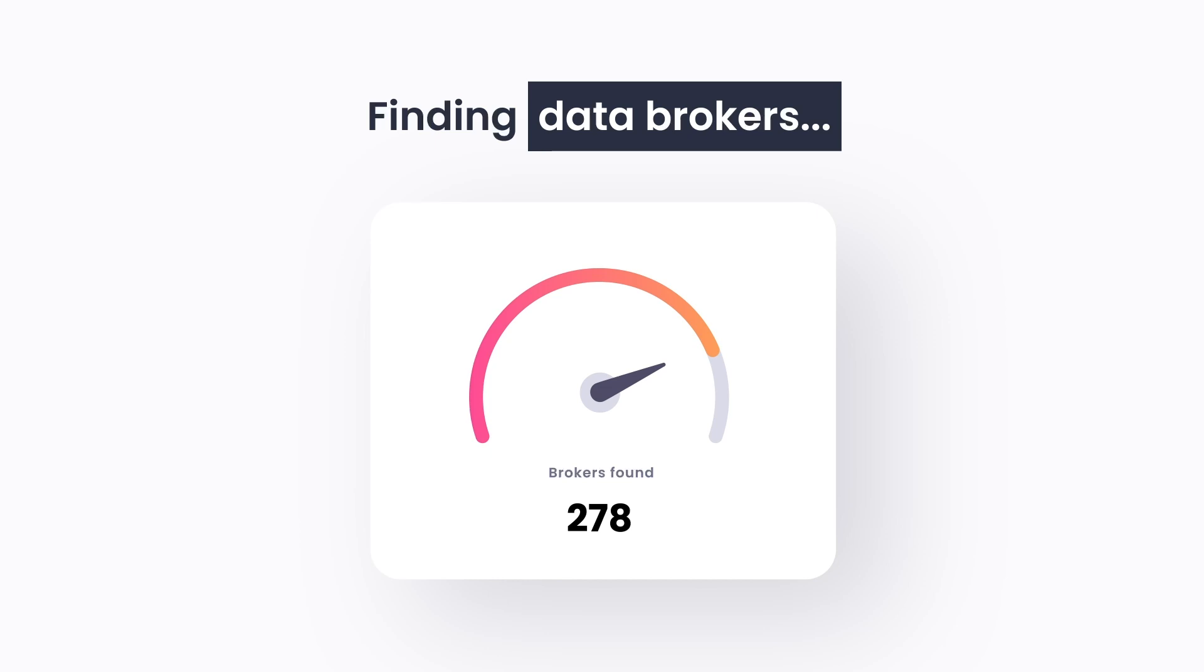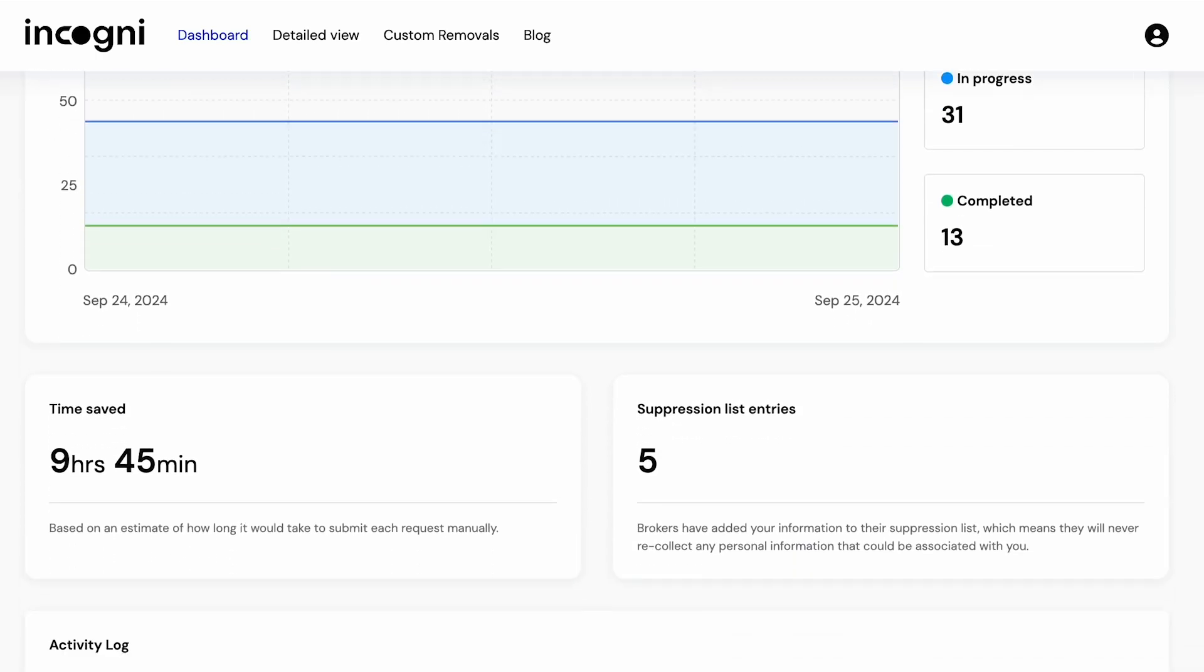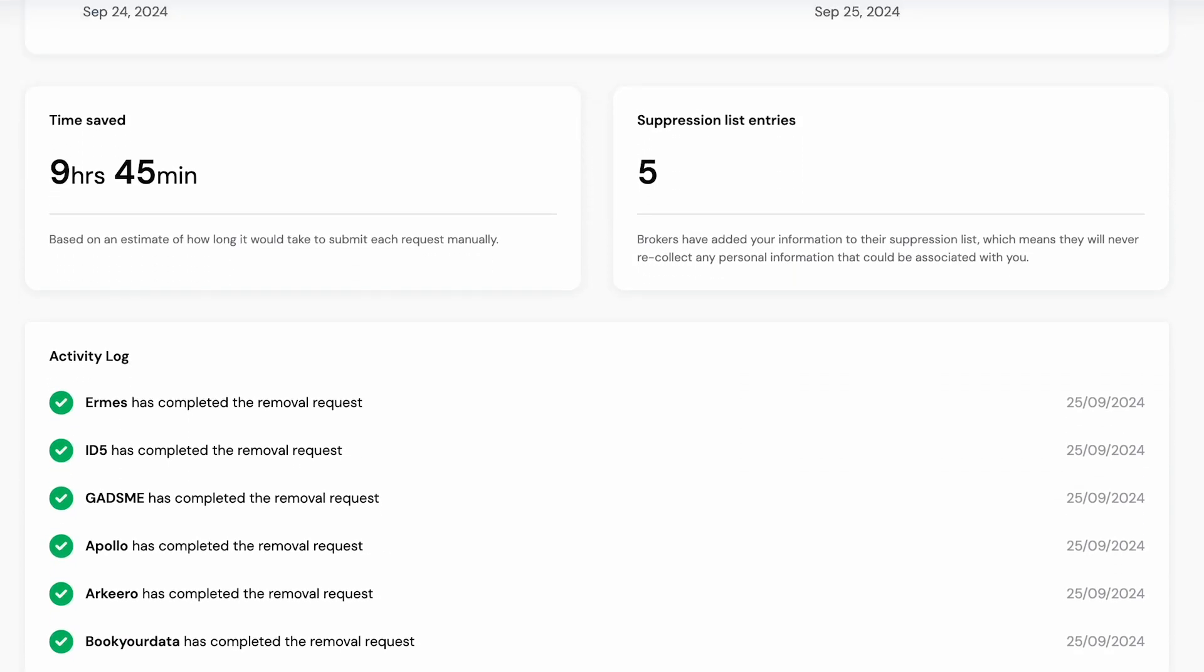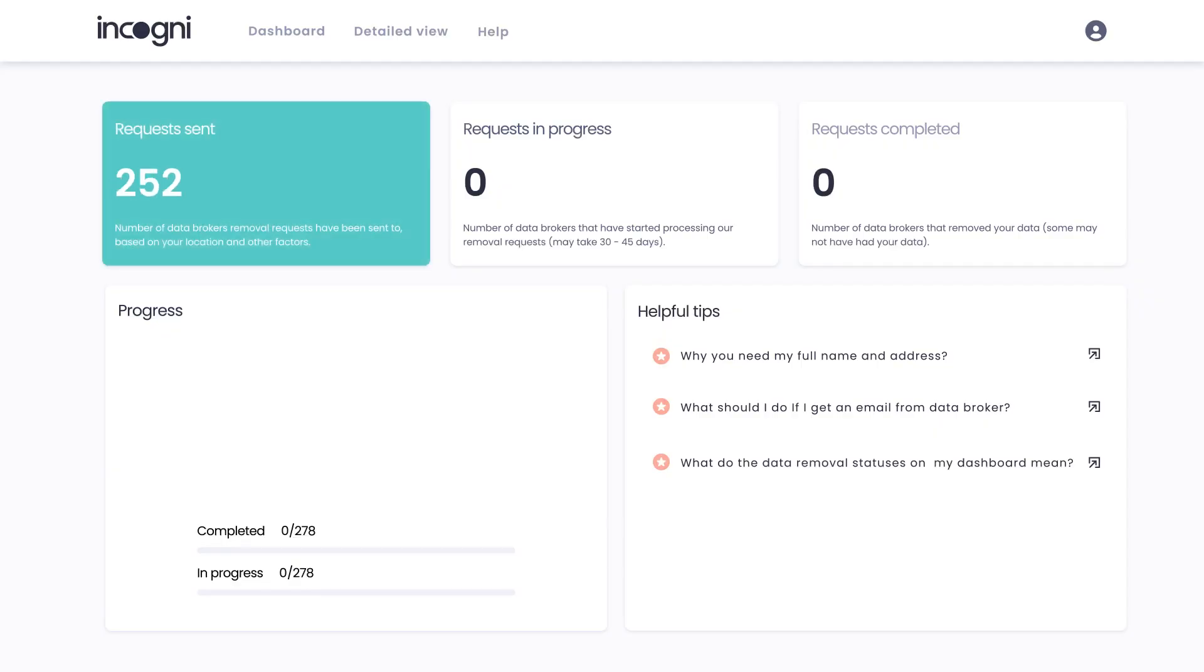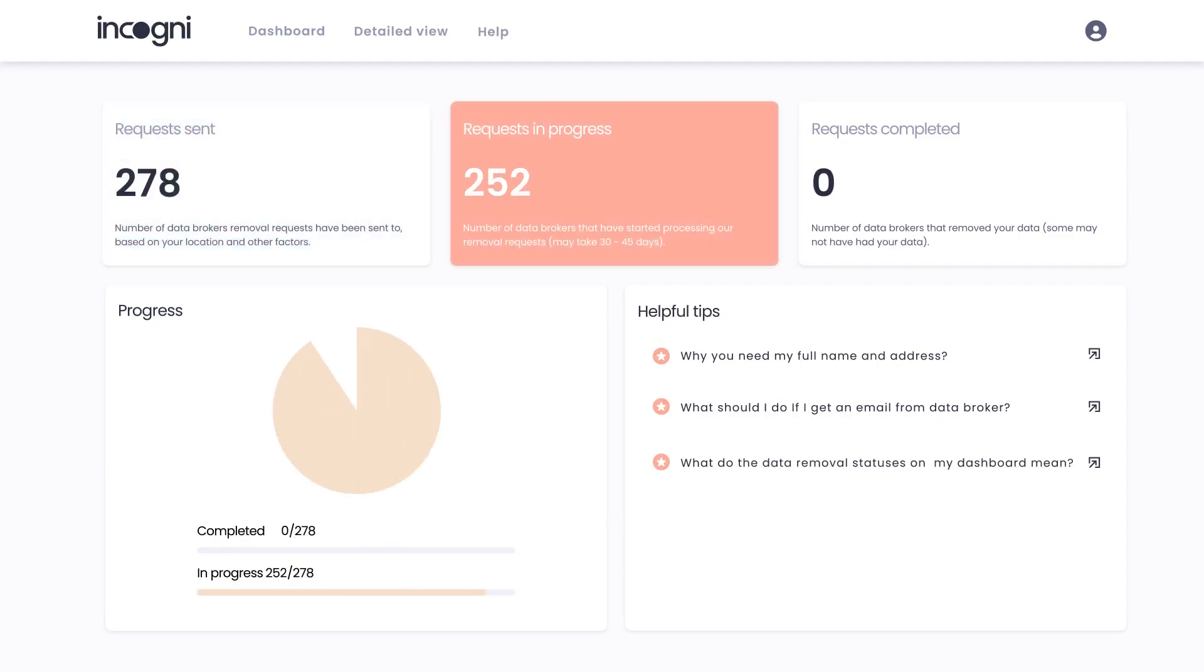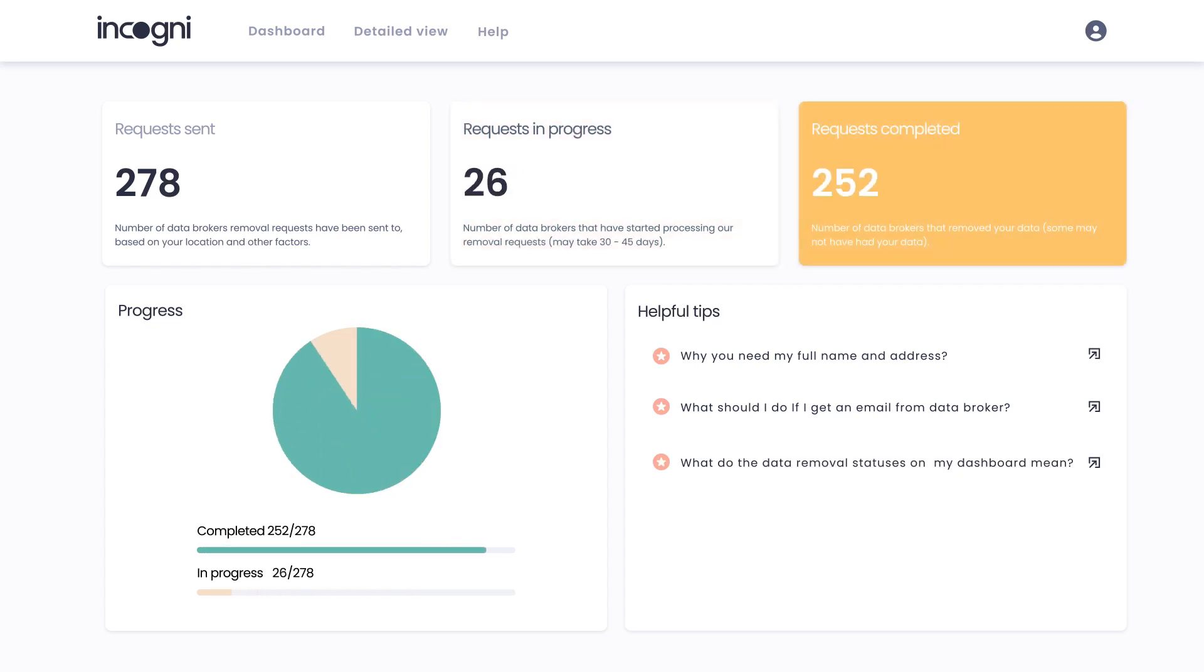I just entered my name, email address, and home address. And then Incogni automatically looks for my data online and asks for it to be removed. They immediately sent out 44 data removal requests. And within 24 hours, 13 of them have already removed any information that they have on me.